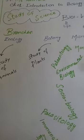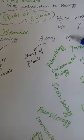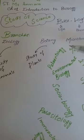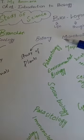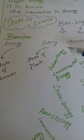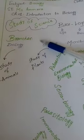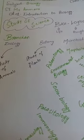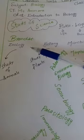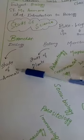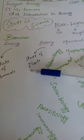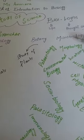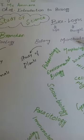Next, branches. The main branches are Zoology, Botany, and Microbiology. Zoology is the study of animals. Botany is the study of plants. Microbiology is the study of microorganisms.